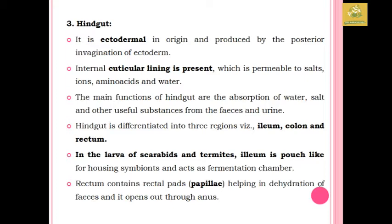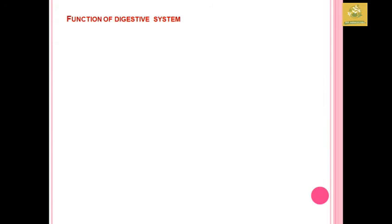The hindgut is ectodermal in origin, produced by the posterior invagination of ectoderm, and has an internal cuticular lining that is permeable to salts, ions, amino acids, and water. The main function of the hindgut is absorption of water, salts, and other useful materials from fecal matter and urine. The hindgut is differentiated into three regions: ileum, colon, and rectum. In larvae of scarabids and dermestes, the ileum is a pouch-like structure used for housing symbiotes and as a fermentation chamber. The rectum contains rectal pads — papilla-like structures that help in dehydration of feces — and it opens through the anus.